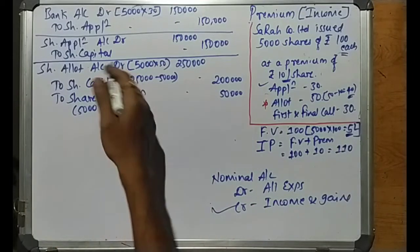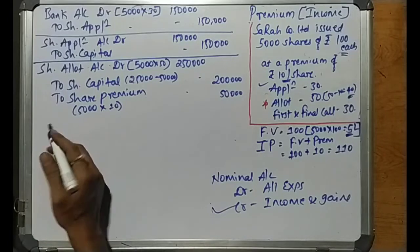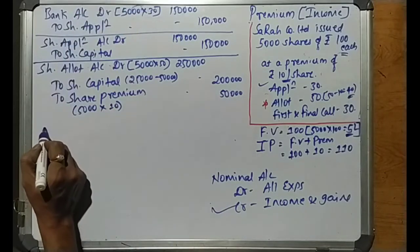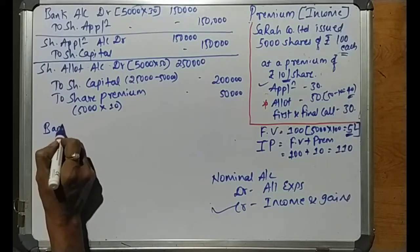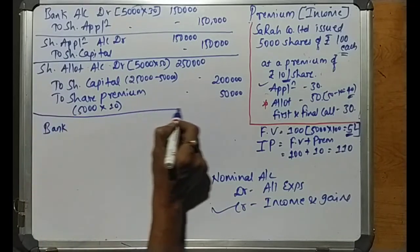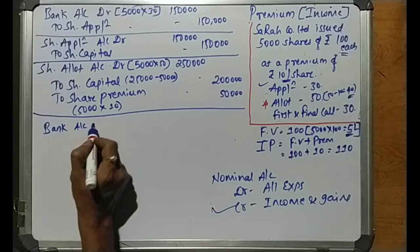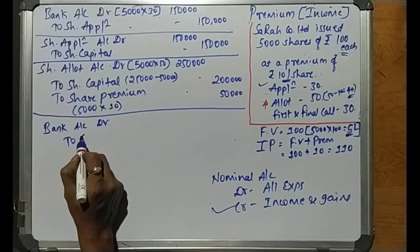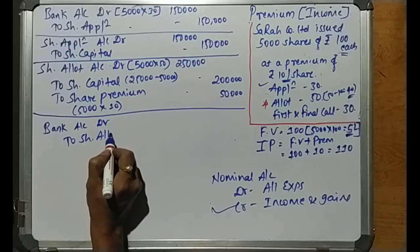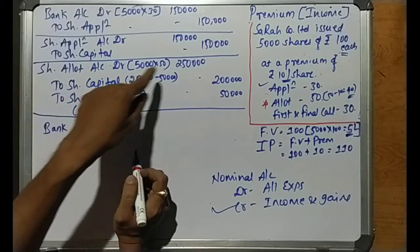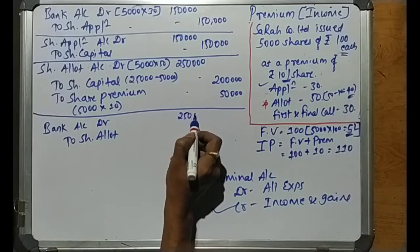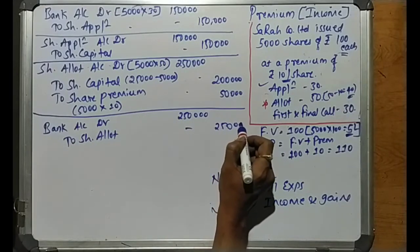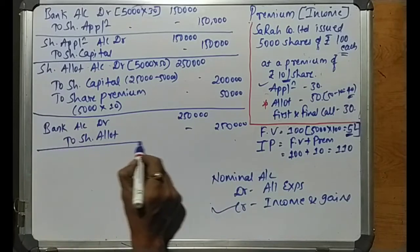Next is the receipt entry for allotment money. The entry is: Bank Account debit to Share Allotment Account. The amount is 2,50,000. So Bank Dr 2,50,000; to Share Allotment Account 2,50,000.